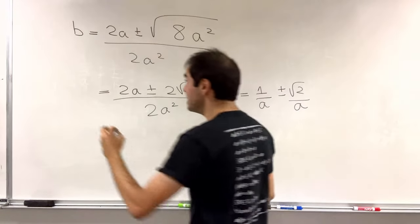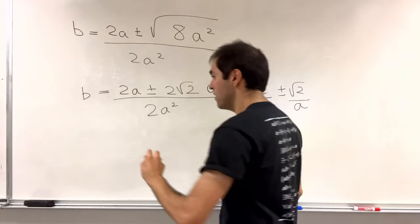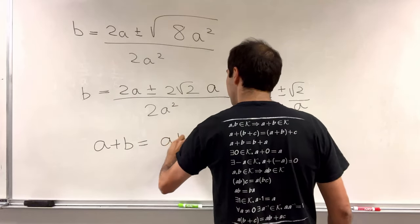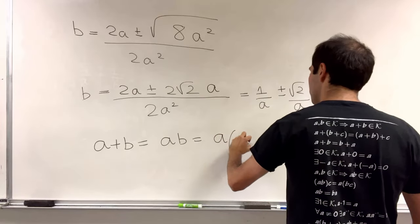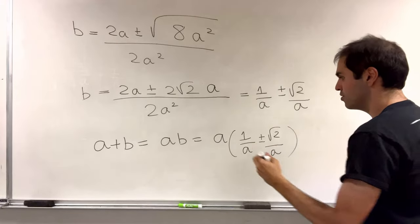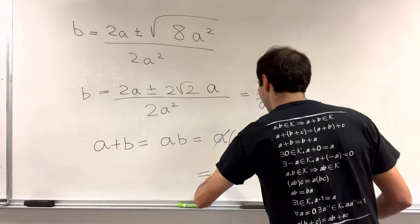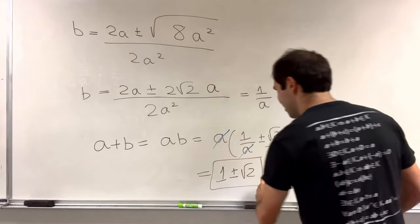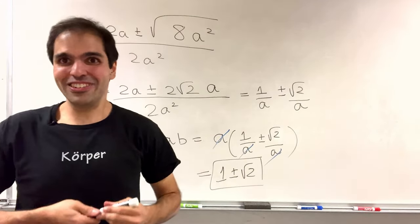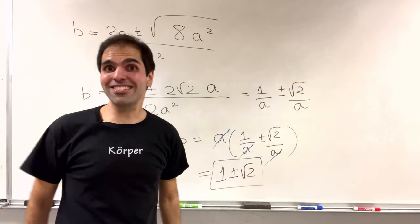Now, this is b. And remember what the question was? The question was, what is a plus b? What we found, a plus b, that is ab. And this is a times 1 over a plus minus square root of 2 over a. So the a's cancel out, and we end up getting 1 plus minus square root of 2. Darn it! Again, it's not 1. We have 1 plus minus square root of 2. Maybe the next one will save us.